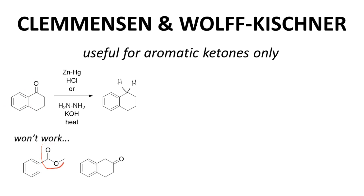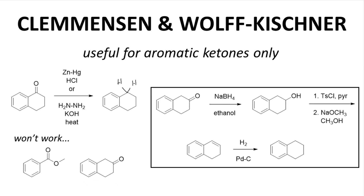If the carbonyl is part of an ester, the reaction will not work. If the carbonyl is close but not directly next to the aromatic ring, the reaction will not work — the ketone must be an aryl ketone. For a ketone not directly on the ring, we could instead reduce it to an alcohol with sodium borohydride, then convert the alcohol to a tosylate and do an E2 elimination with strong base. The resulting alkene could then be reduced with hydrogen and palladium on carbon. We can't do this reduction in one step like the Clemmensen, but we can still accomplish it through other reduction reactions — it just takes a bit more work.